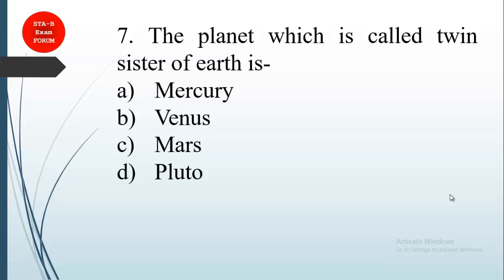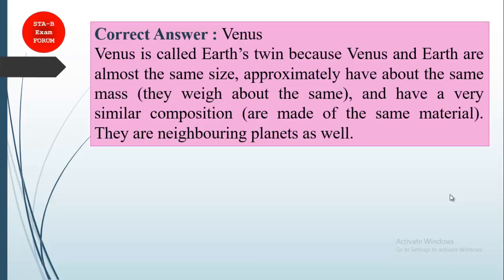Why? Let's see. First, it has similar size, similar mass, and similar composition. Both these neighboring planets have similar characteristics, so they are considered Earth's twin. Venus is called Earth's twin.